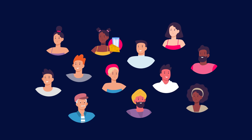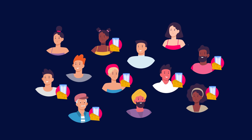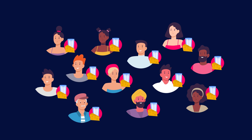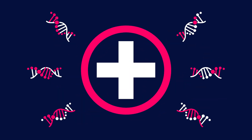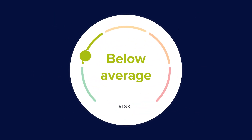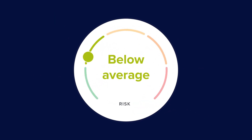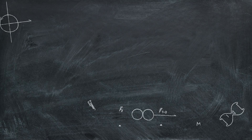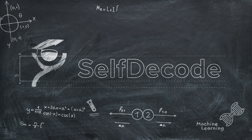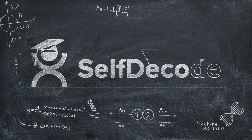Through natural selection, some variants become so common that they are carried by many people. An example is the genetic variant that helps you digest dairy as an adult. Some variants can influence many different aspects of our health, including how likely we are to develop a certain disease or health problem. That's why understanding your genetics can be useful for protecting your health and well-being.